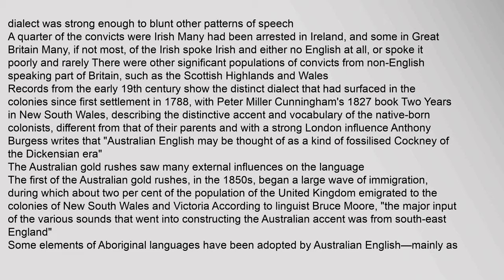A quarter of the convicts were Irish. Many had been arrested in Ireland, and some in Great Britain. Many, if not most, of the Irish spoke Irish and either no English at all, or spoke it poorly and rarely. There were other significant populations of convicts from non-English speaking parts of Britain, such as the Scottish Highlands and Wales. Records from the early 19th century show the distinct dialect that had surfaced in the colonies since first settlement in 1788.